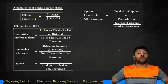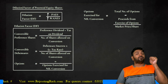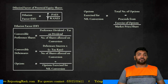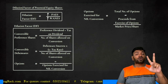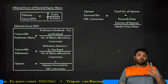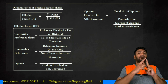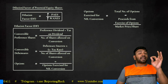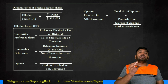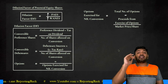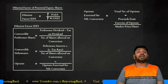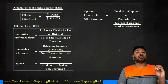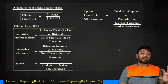The steps to calculate diluted EPS are: Step 1 — determine basic EPS. Step 2 — identify potential equity shares. Step 3 — calculate the dilution factor for each potential equity share (increase in PAS ÷ increase in WANES). Step 4 — rank dilution factors from least to highest. Options always rank first because their dilution factor is zero (zero divided by anything is zero).